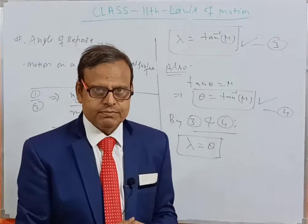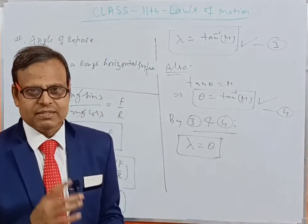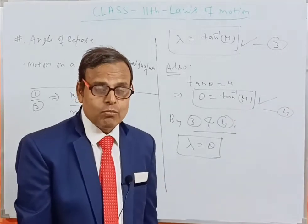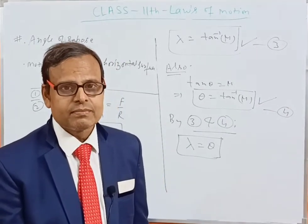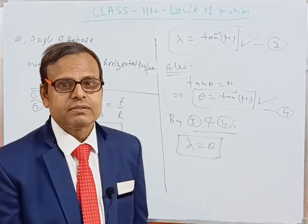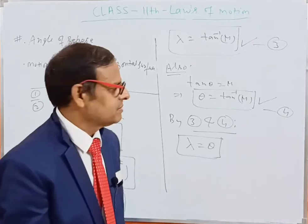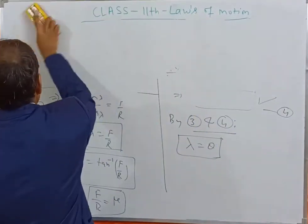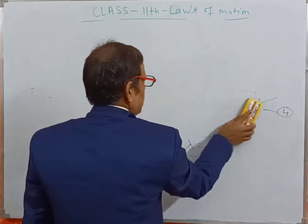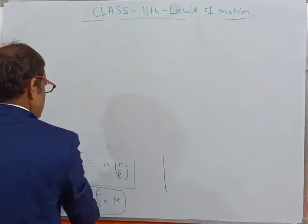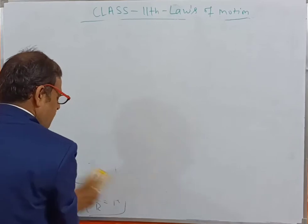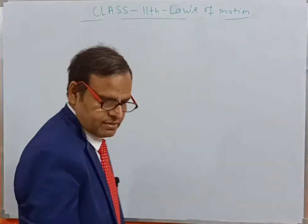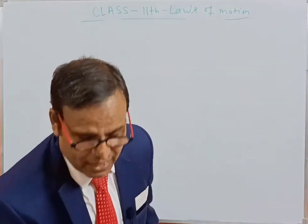Now let us move forward to the next content, which is Motion on a Rough Horizontal Surface. Let us understand it. A rough horizontal surface means there is a surface with roughness on it, which means there is friction. We place a body of mass M on it, with weight Mg acting downward and normal reaction R acting upward.